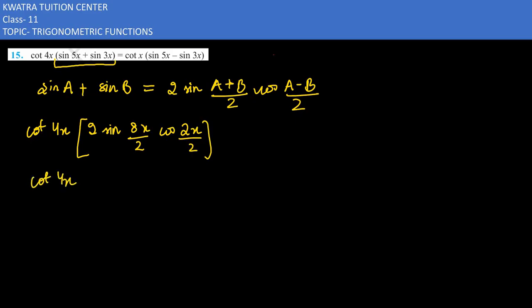So what is our value? Cot 4x is there, 2 is there, sin 4x is there, cos x is there.